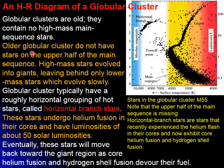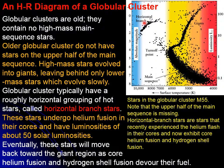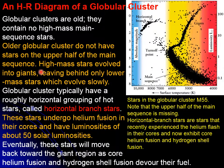What gives us a clue of what happened is that these clusters do not have stars on the upper half of the main sequence — those upper high mass stars moved out and became giants. These clusters tend to have a grouping called the horizontal branch stars. These are ones that undergo helium fusion, and they have a luminosity of about 50 times that of the Sun. Eventually these stars will continue on to whatever comes next, which we'll see in the next chapter.